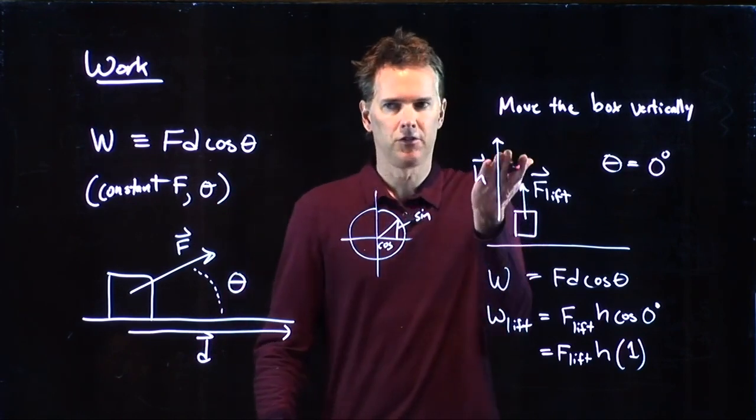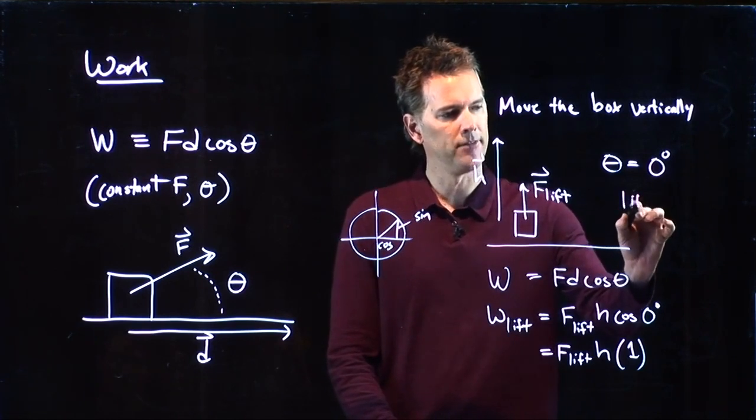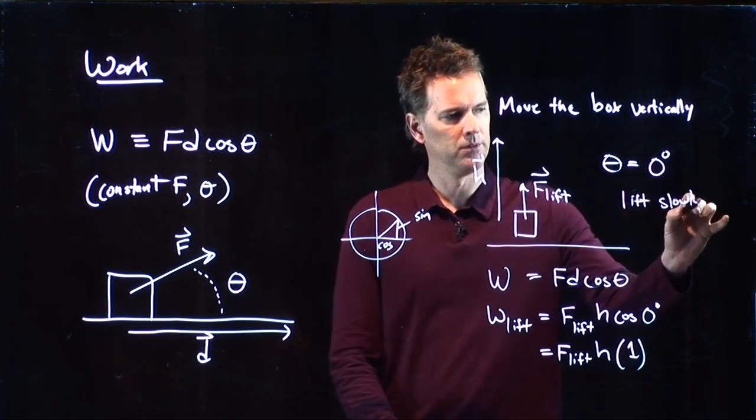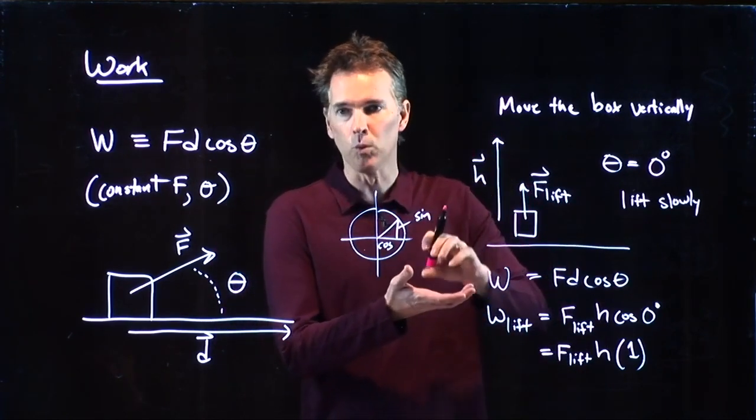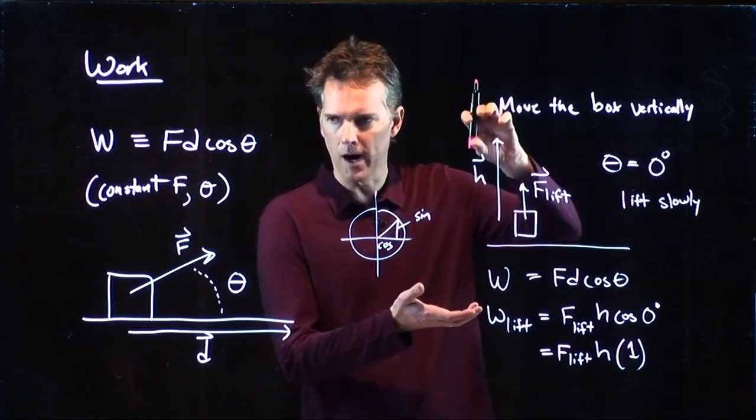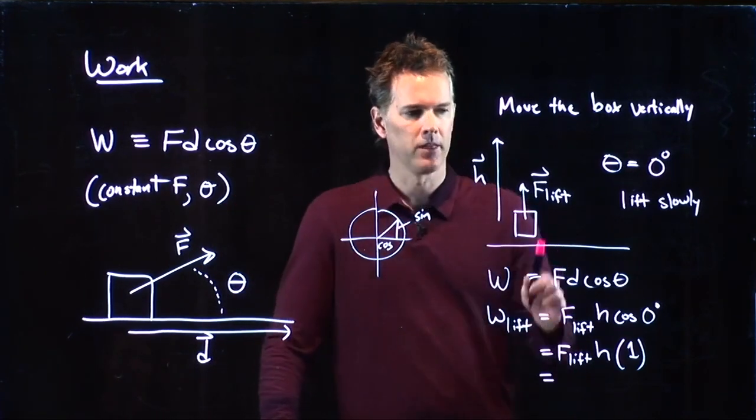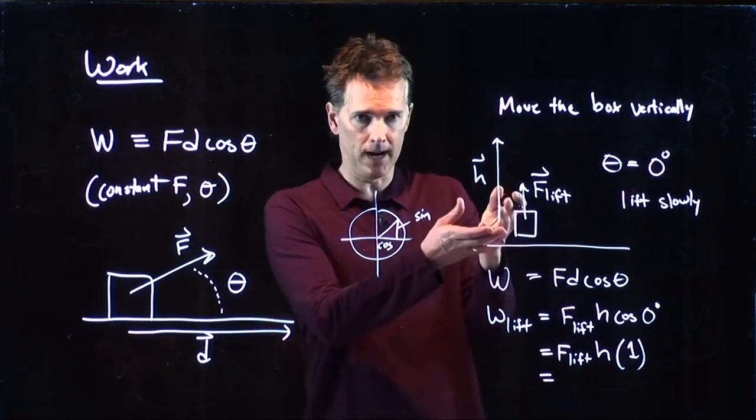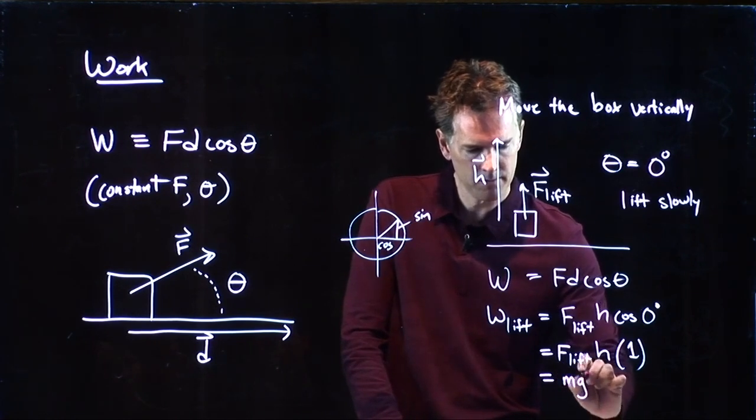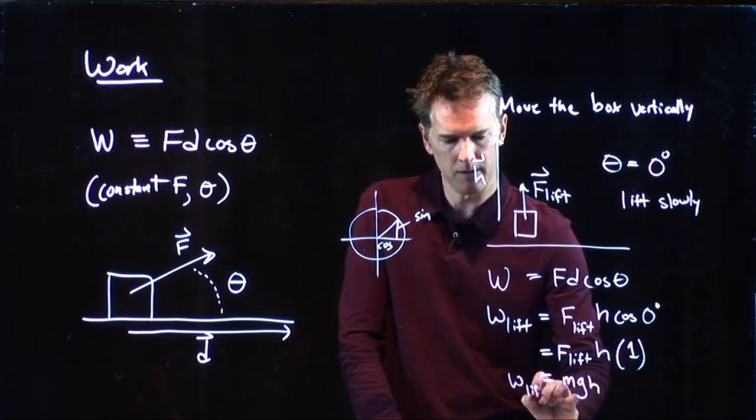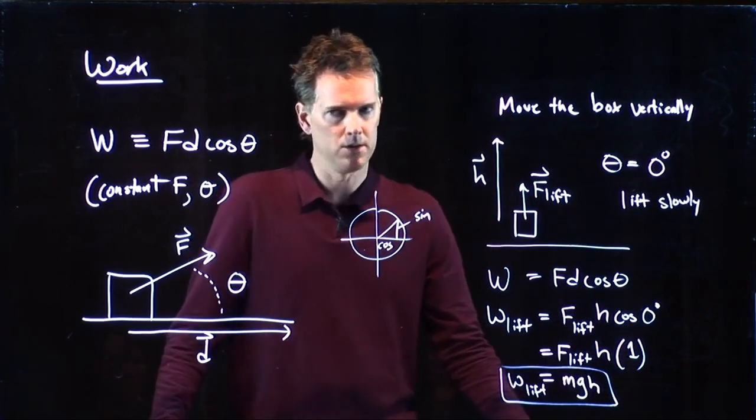And so we get Flift times h times cosine of zero, which is one. Now, if I lift this thing slowly, then what is Flift equal to? Slowly just means I'm not going to accelerate it very much. We don't have to worry about, is this thing acquiring a lot of kinetic energy? And so if we lift it slowly, then the force that I have to apply to lift this box is just mg the weight. And so we get the work that you do in lifting it is just equal to mgh.